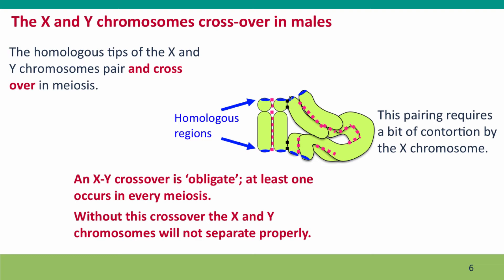Not only do they pair, but they cross over. In fact, a crossover between the X and Y chromosome is obligated — there needs to be at least one in every meiosis, for exactly the same reason that there needs to be at least one crossover between homologous autosomes that have paired in meiosis. The crossover serves to tie the X and Y chromosome together, so that the spindle fibers can tug on them and bring them to the center of the cell without pulling them apart, thereby making sure that the X and Y chromosome, when they do separate, move to opposite poles of the cell.